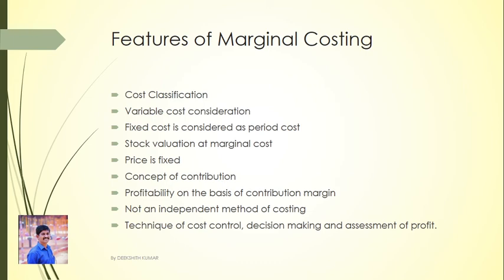The fourth feature is Stock Valuation at Marginal Cost. The stock of work-in-progress or finished goods are valued at the marginal cost of production. The fifth feature is that Price is fixed based on the Marginal Cost and Contribution. Fixed costs are charged against the contribution during a period.